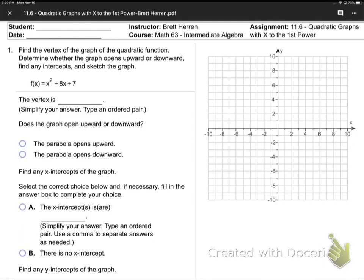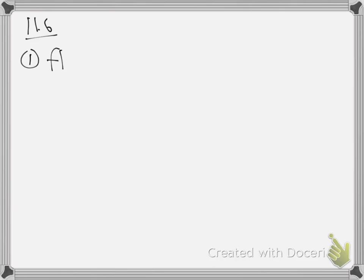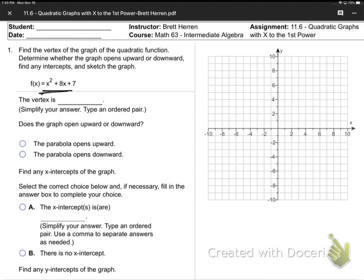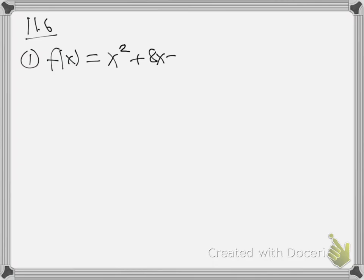Now today in 11.6 we're going to have things like this. In 11.6, question number one: f of x equals x squared plus 8x plus 7. And they want us to graph that. Notice - no parentheses squared in 11.6. So I can't just do the opposite-same thing. That only works when you've got parentheses squared.